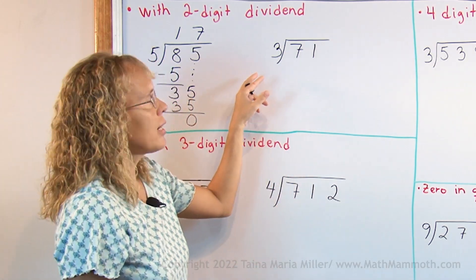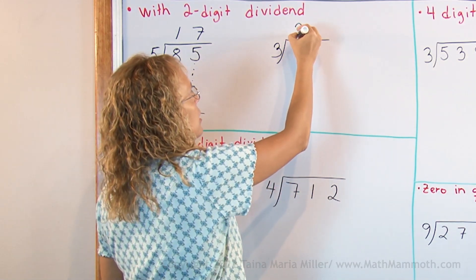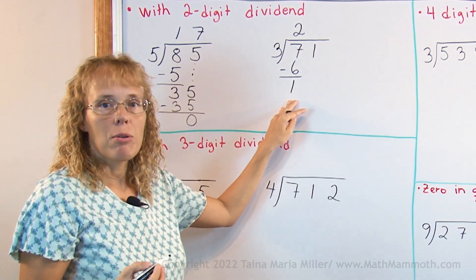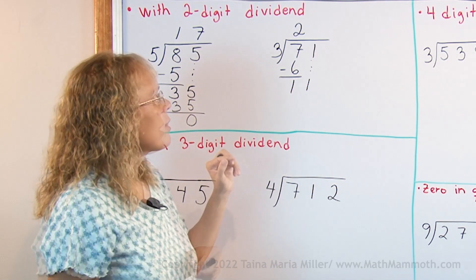Or here, we think. How many times does 3 go into 7? 3 goes into 7, 2 times. 10 as a remainder. But now we add to that the 1 from here, or drop down the digit. And then think, how many times does 3 go into 11?